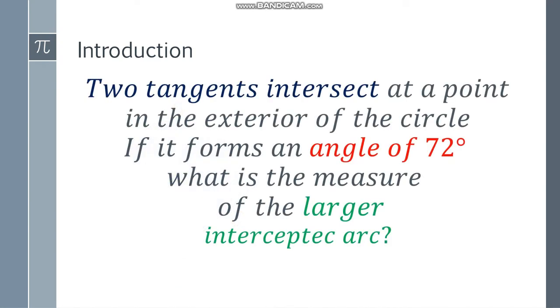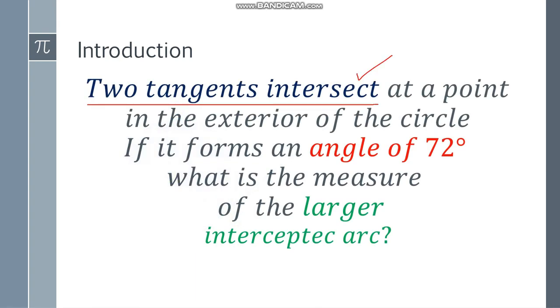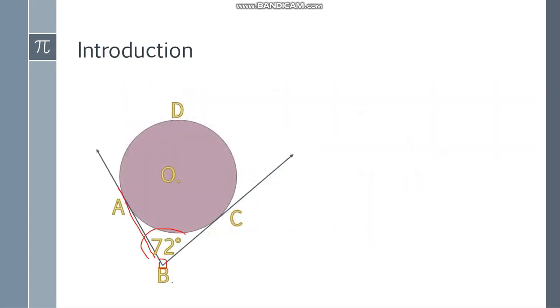Let's go back to the question. Two tangents intersect. Yes, we have done it. Two tangents intersect at the point, and an angle of 72 degrees. 72 degrees, correct.